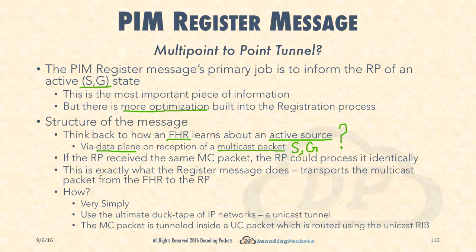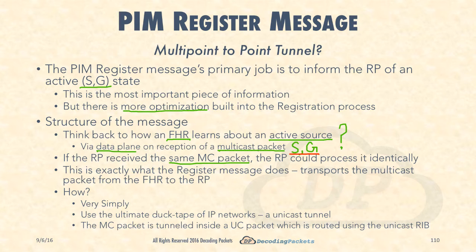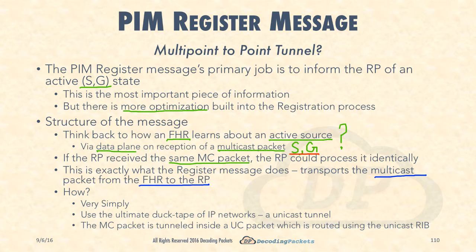Think about if the RP received the same multicast packet somehow. Instead of the FHR, it was the RP who received that same multicast packet. The RP could process it identically to how the first hop router processes it, and it would also have the S comma G information. This is exactly what the register message does — it literally takes that multicast packet and transports it from the FHR to the RP. Once the RP has it, it has the S comma G state and can bootstrap all of the other processes it needs to.